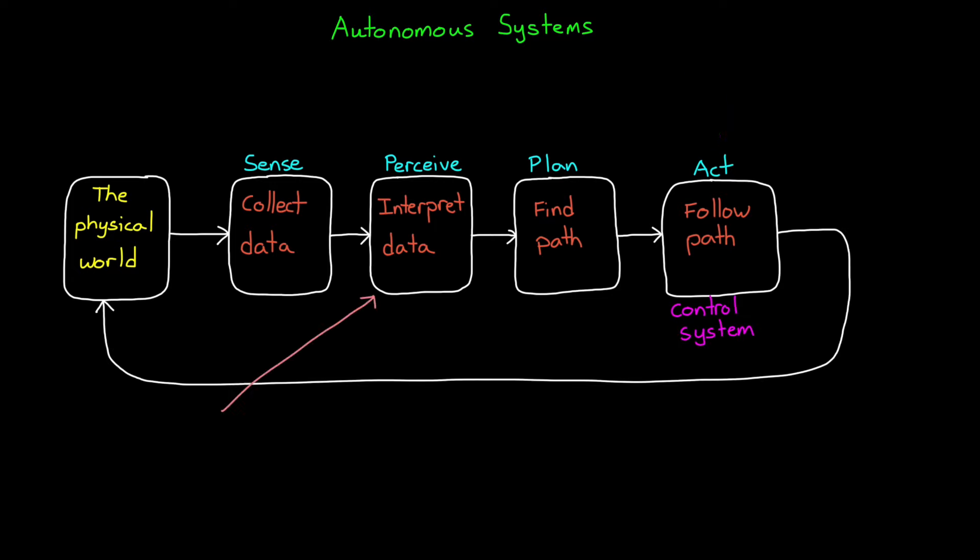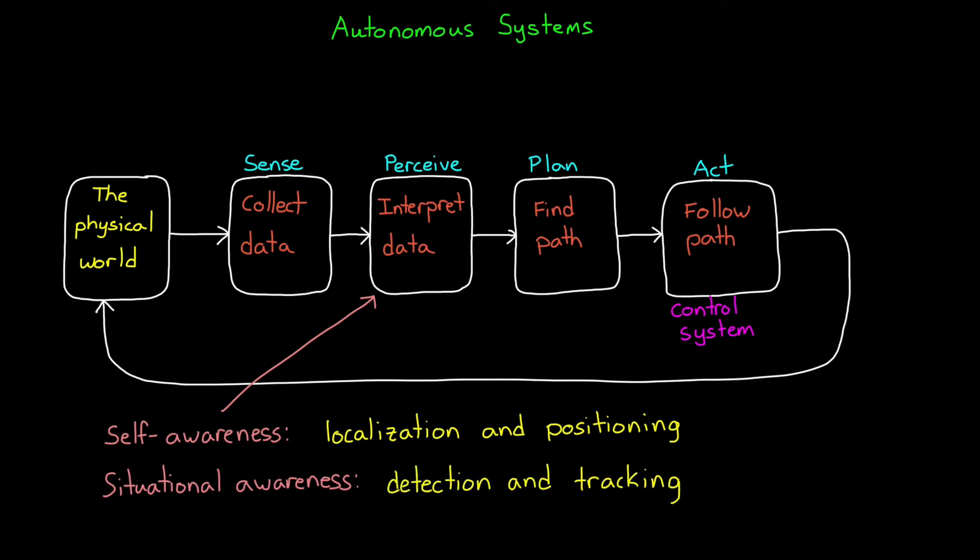Let's go back to the Perceive step, because I want to go into a little more detail here. This step has two different but equally important responsibilities. It's responsible for self-awareness, which is referred to as localization or positioning. You know, answering questions like where am I, what am I doing, and what state am I in? But it's also responsible for situational awareness, things like detecting other objects out in the environment and tracking them.